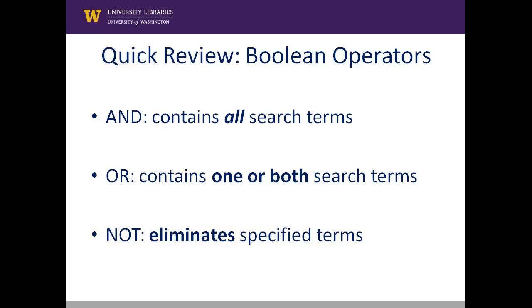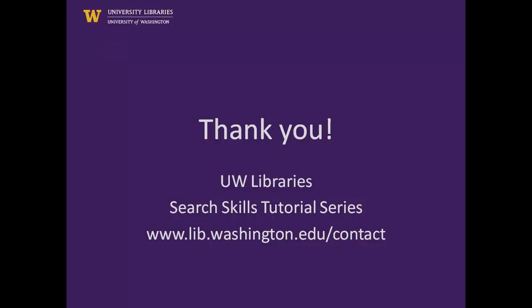As a quick review, remember that the AND operator returns documents that contain all of your search terms. The OR operator will return documents that contain one or both of your search terms, while the NOT operator will return documents that do not contain specified terms. Thanks for watching this brief tutorial on how to use Boolean operators AND, OR, and NOT. Good luck in your searching, and please feel free to ask a librarian if you need further help.